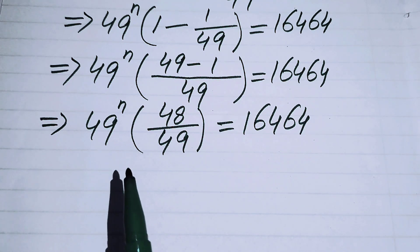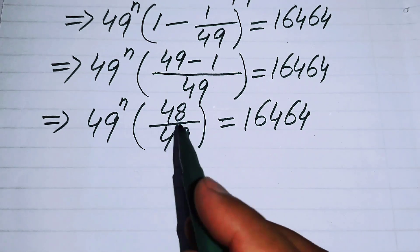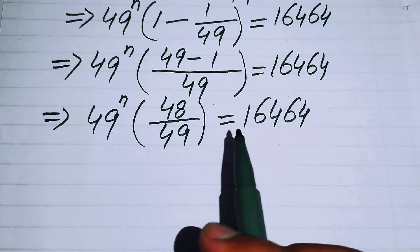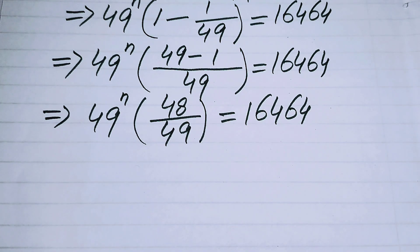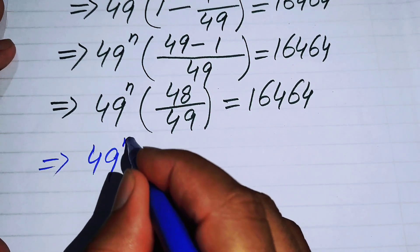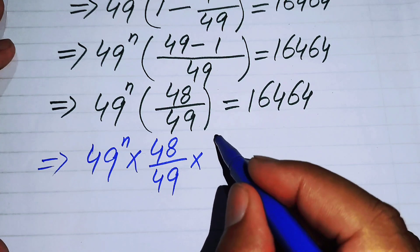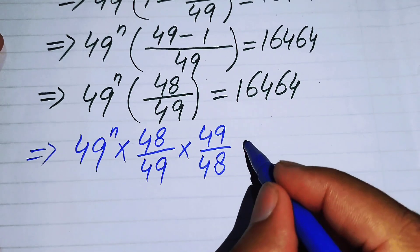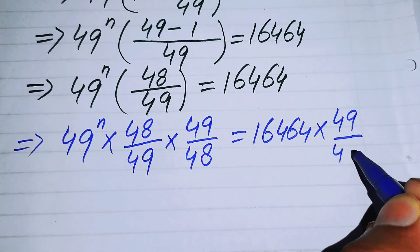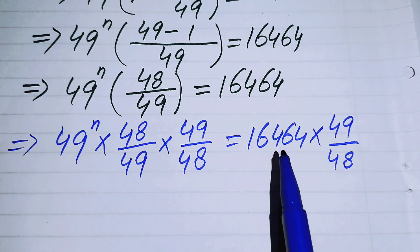On the left-hand side we have 48 over 49 multiplied by 49^n. To isolate 49^n, we multiply both sides by 49 over 48, giving 49^n equals 16464 multiplied by 49 over 48.